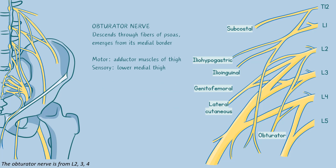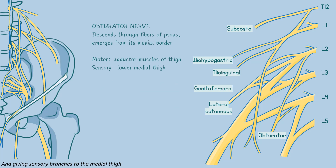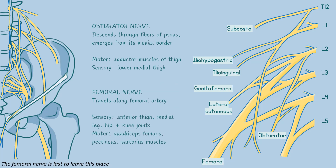The obturator nerve is from L2-3-4; it innervates the thigh adductors and much more. Descending through the psoas on its medial side and giving sensory branches to the medial thigh.